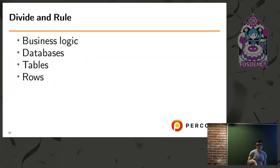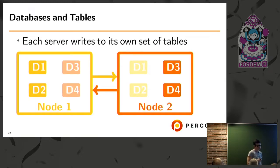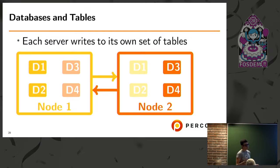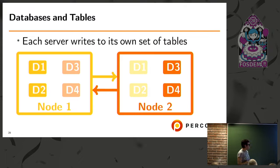The most important thing for active-active is to divide and rule — based on either business logic or database objects. The easiest way is to agree that each server should write to its own set of tables or databases. For example, the yellow node writes only to certain tables, and those are replicated. This way, the yellow node cannot corrupt the orange node's data, and vice versa. This is relatively safe.